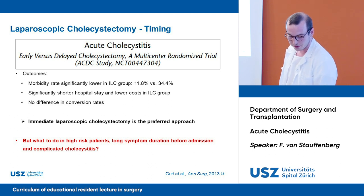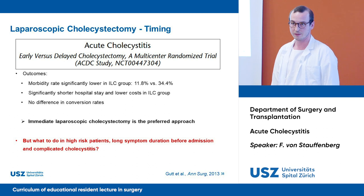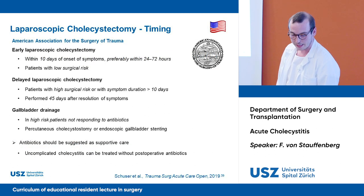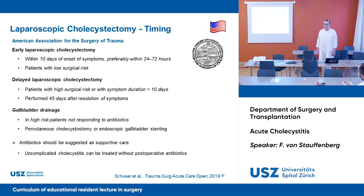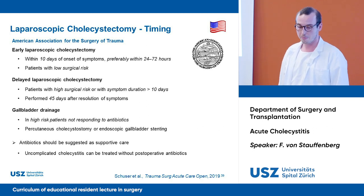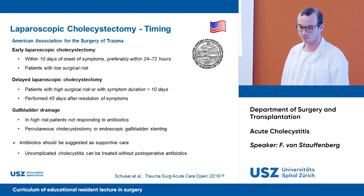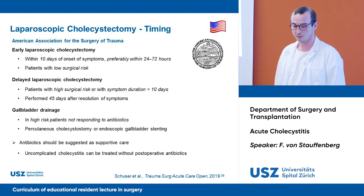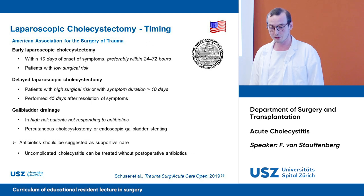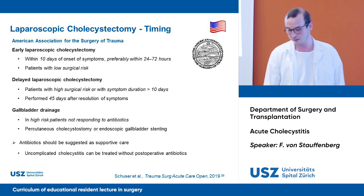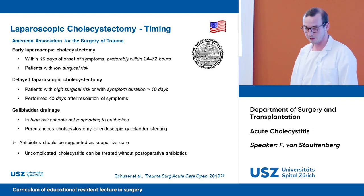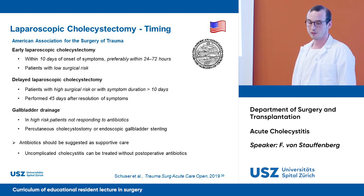For patients with high risk, long symptom duration, or complicated cholecystitis, the 2018 American Association for the Surgery of Trauma recommended early laparoscopic cholecystectomy within 10 days of onset of symptoms, preferably within the first 24 to 72 hours, for low surgical risk patients. Delayed laparoscopic cholecystectomy should be done in high surgical risk patients or with symptom duration over 10 days, performed 45 days after resolution. In high-risk patients not responding to antibiotics, we should perform gallbladder drainage via percutaneous cholecystostomy or endoscopic gallbladder stenting. Antibiotic therapy should be used as supportive care in all cases.